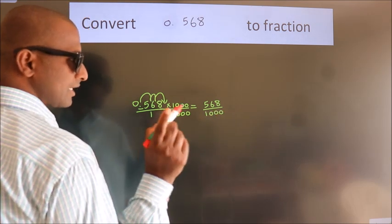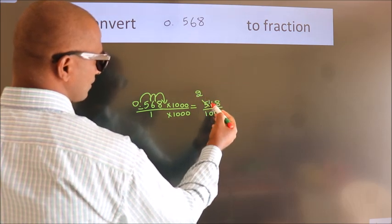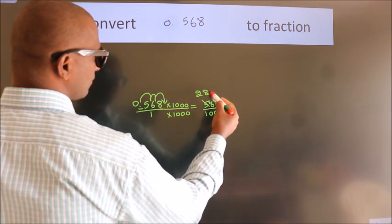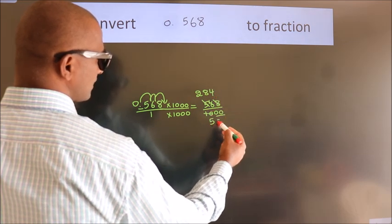Now I cancel with 2: 2 2s, 2 8s, 2 4s, 2 5s, this 0s as it is down.